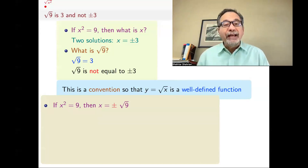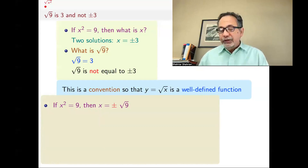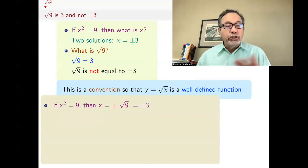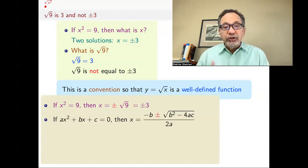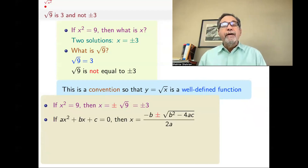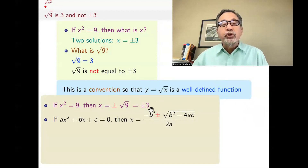The correct way of writing that is x equals plus or minus square root of 9, which is plus or minus 3. This also explains why in the quadratic formula, we have a plus or minus.